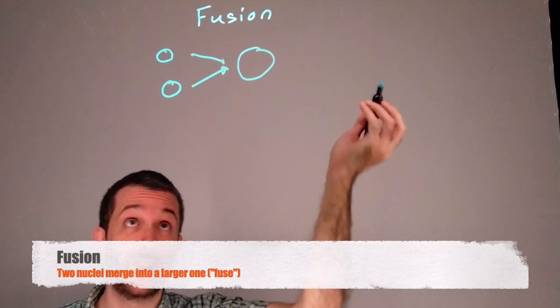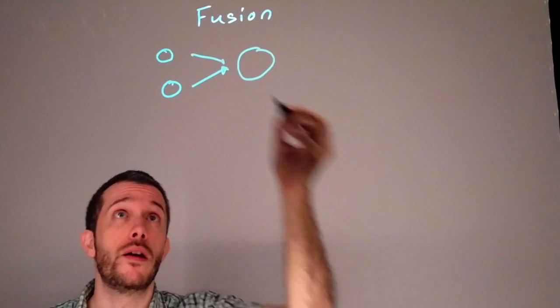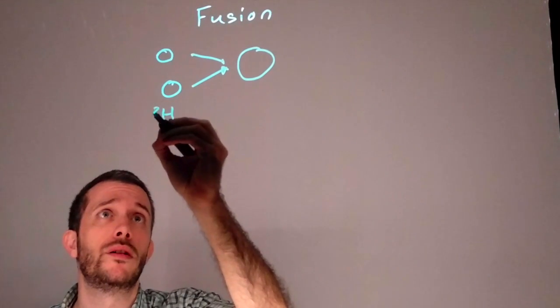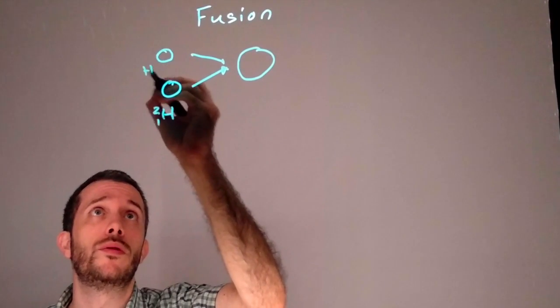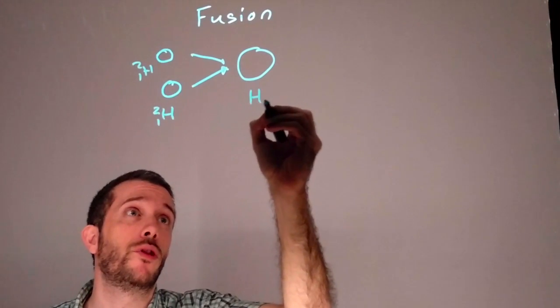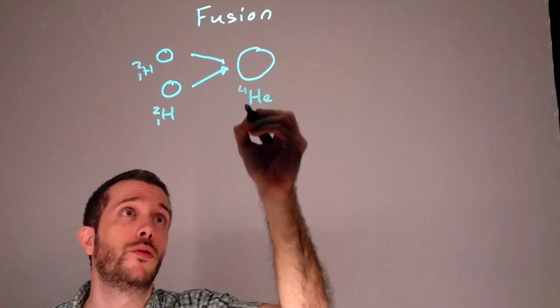Sometimes there's some other small particles flying off in the process. An example could be if we have hydrogen 2. If they merge they can form helium 4.